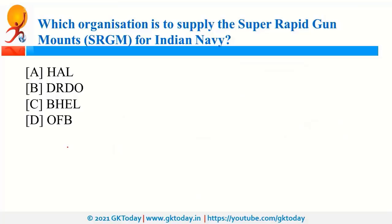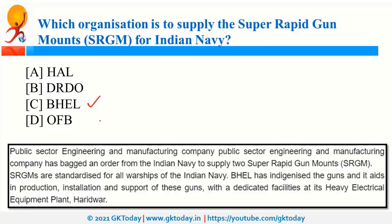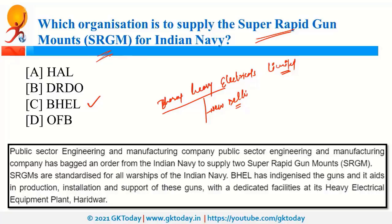BHEL — Bharat Heavy Electricals Limited, a public sector entity headquartered in New Delhi — is going to supply super rapid gun mounts for the Indian Navy. Indian Navy was also in news because of TROPEX 21, which is the largest exercise conducted by the Indian Navy and was organized in the Indian Ocean region.